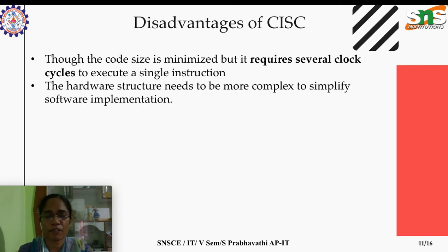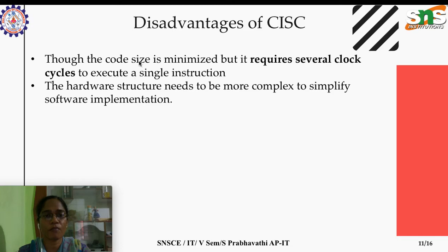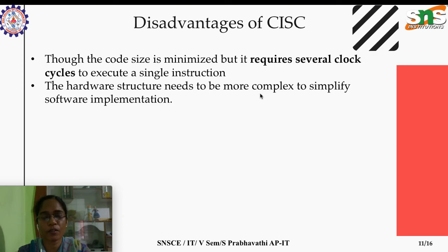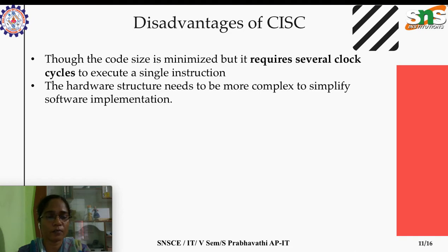The disadvantage of CISC is that though the code is minimized, it requires several clock cycles to execute a single instruction since it looks like a smaller program. Hardware structure needs to be quite complex — since software implementation is simple, the hardware complexity is high in CISC architecture to interpret and execute the program.